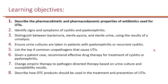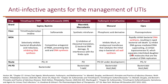The first learning objective is to describe the pharmacokinetic and pharmacodynamic properties of antibiotics used for UTIs. Historically, fluoroquinolones — such as ciprofloxacin — have been frequently used for UTIs. The mechanism of action of fluoroquinolones involves inhibition of bacterial DNA synthesis, resulting in rapid bacterial cell death, by inhibiting two enzymes: DNA gyrase, often in gram-negative bacteria, and topoisomerase IV, often in gram-positive bacteria.